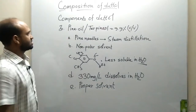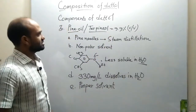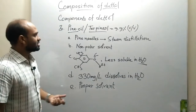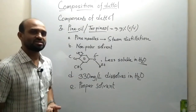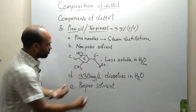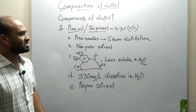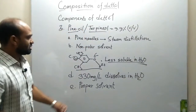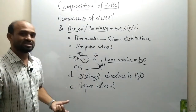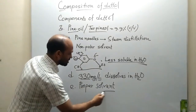Dear students, the third component of Dettol is pine oil, or terpene oil, and it is taken at 9.9% — that means 9.9 milliliters in 100 milliliters of Dettol solution. Pine oil is obtained by the steam distillation of pine needles, that means from the pine tree, and it is a kind of non-polar solvent. The main component of Dettol, 4-chloro-3,5-dimethylphenol, has polarity; nevertheless, it is less soluble in water — only 33 milligrams per liter dissolves in water. Pine oil is used to increase the solubility of the main component of Dettol, making it a proper solvent here.